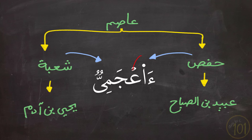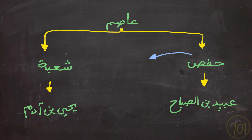Hafs applies Tashil and says 'A-A'ja-miy,' but Shu'bah does not apply Tashil and just pronounces full Hamza: 'A-A'ja-miy.' Both are correct and both were passed down from Asim. But Hafs became famous for teaching it with Tashil and Shu'bah became famous for teaching it with full Hamza.